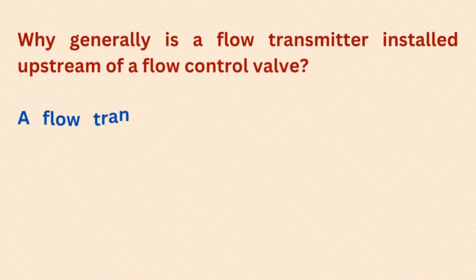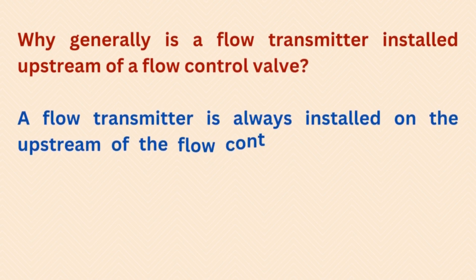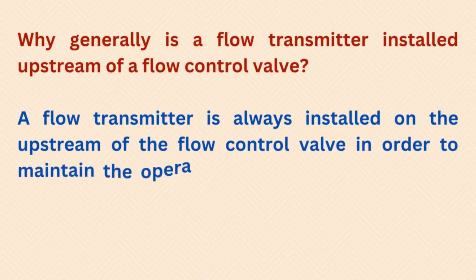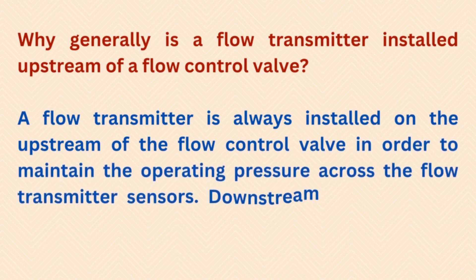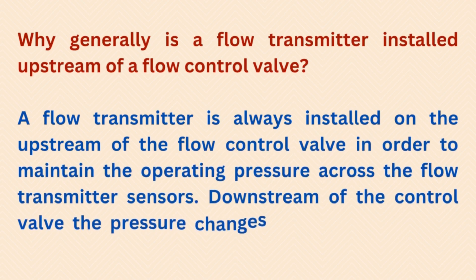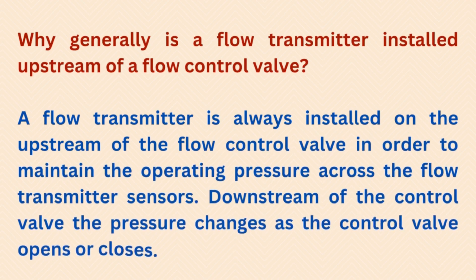Why generally is a flow transmitter installed upstream of a flow control valve? A flow transmitter is always installed on the upstream of the flow control valve in order to maintain the operating pressure across the flow transmitter sensors. Downstream of the control valve, the pressure changes as the control valve opens or closes.